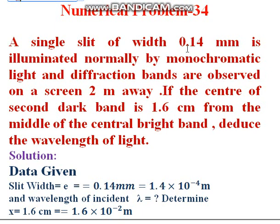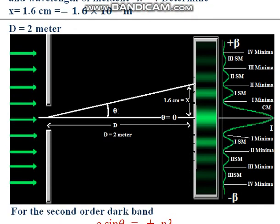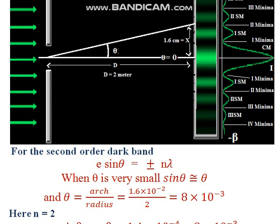Next problem: a single slit of width 0.14 millimeter is illuminated normally by monochromatic light and diffraction bands are observed on a screen 2 meters away. The center of the second dark band is 1.6 cm from the middle of the central bright band — find the wavelength. So the second minima is at x = 1.6 cm from the central maxima, and the slit-to-screen distance is 2 meters. Let the second minimum be at angle θ.